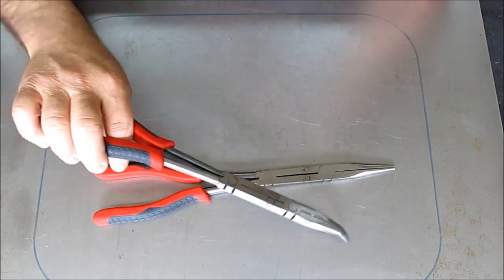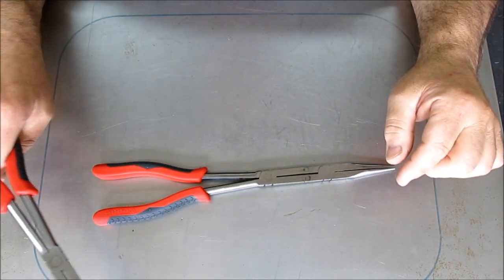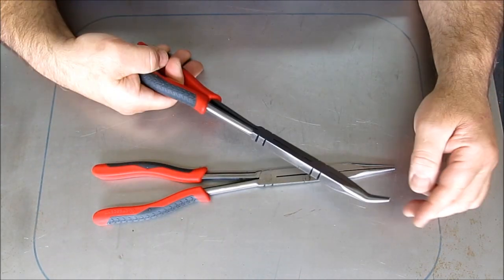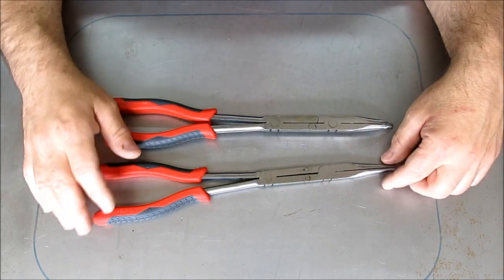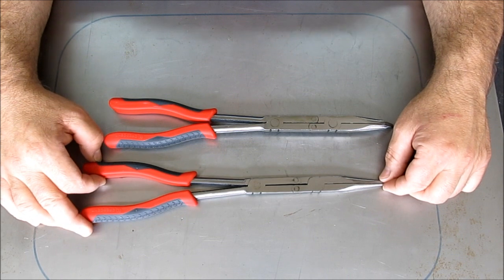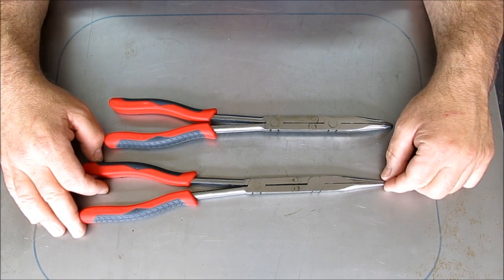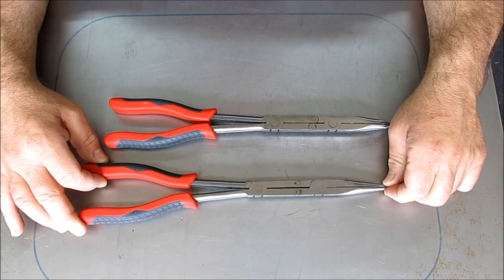So you can reach in there and you can grab some chips and and pull them out safely and and get them out of your way and drag them out of your way. Right. Anyway, this little set here of two was on sale for 20, 20, $24, 22 or $24, something like that.